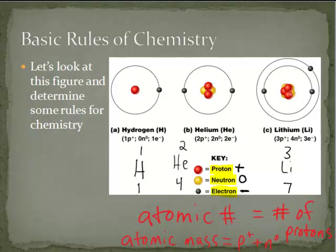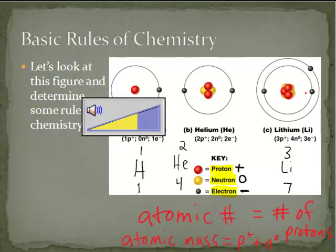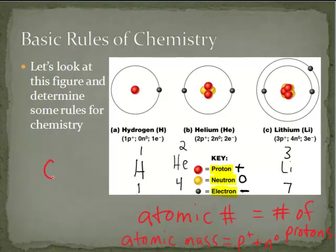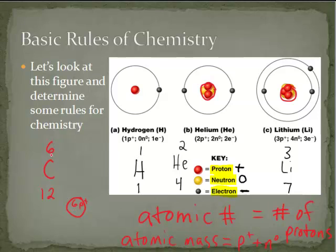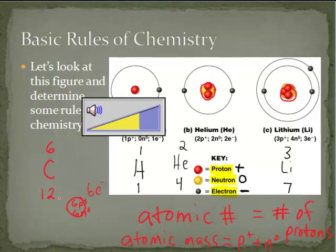As long as an atom has no charge, the number of protons and electrons are going to be the same. Let's go back and look at carbon. Carbon has an atomic number of six and a mass number of twelve. If you were to draw carbon, you'd have a nucleus with six protons and, because the mass number is twelve, six neutrons. Assuming no charge, we'd also have six electrons floating around that atom.